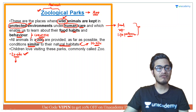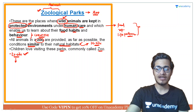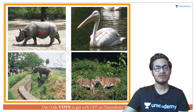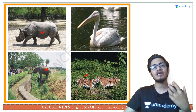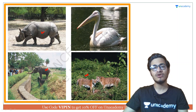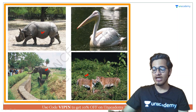Children love visiting these parks, which are commonly called 'zoo'. As you can see, animals like rhinos and many others are what you usually get to see in a zoo — which is why people go there. We are very fascinated to see the zoo; I have visited one in childhood and I hope you have too.